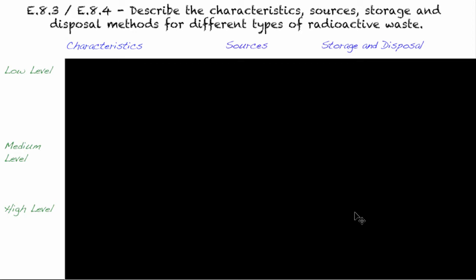Welcome to E.8.3 and E.8.4. We're combining those into this video. We're going to describe the characteristic sources, storage and disposal methods for different types of radioactive waste. We have hundreds of nuclear power plants around the world and radioisotopes in medicine. We need to be able to dispose of these in some way while preserving the environment and protecting health. We divide these into three different types: low level, medium level, and high level radiation. We're going to start off with low level.